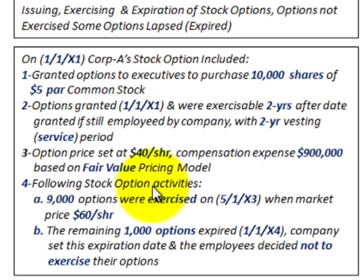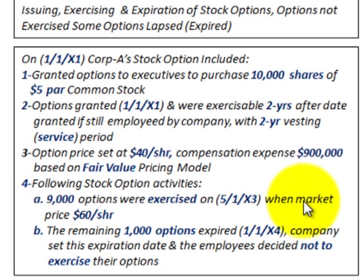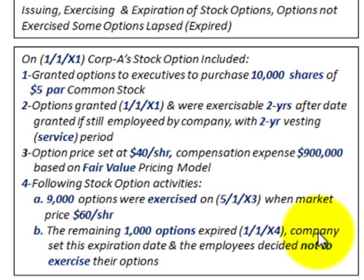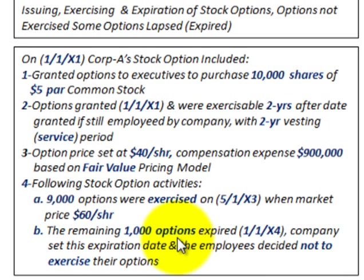The following stock option activities occurred: 9,000 options were exercised on 5/1/X3 when the market price was $60 per share. The remaining 1,000 options expired on 1/1/X4 — the company set this expiration date and the employees decided not to exercise their options, so 1,000 options expired.